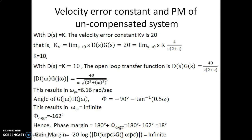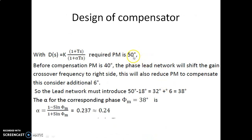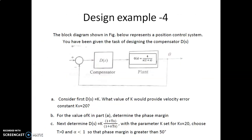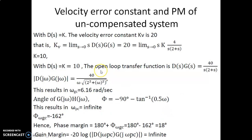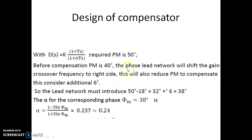Let us proceed with the compensation. Before compensation we have a phase margin of about 18 degrees. We need this to become 50 degrees. The introduction of a phase-lead network will also introduce a shift of the gain crossover frequency, which will reduce the phase margin somewhat. Since we require 50 degrees and already have 18 degrees, another 32 degrees has to be provided.